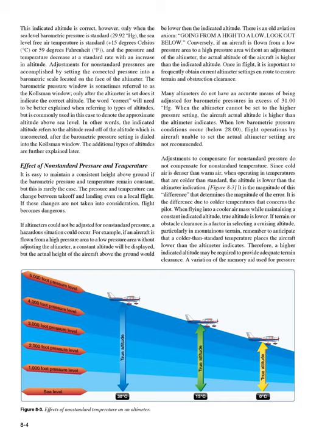Assume the pilot did not adjust the altimeter at Abilene and continued using the Mineral Wells setting of 29.94 Hg. When entering the Abilene traffic pattern at an indicated altitude of 2,600 feet, the aircraft would be approximately 250 feet below the proper traffic pattern altitude. Upon landing, the altimeter would indicate approximately 250 feet higher than the field elevation. Mineral Wells setting: 29.94; Abilene setting: 29.69; difference: 0.25. Since 1 inch of pressure equals approximately 1,000 feet of altitude, 0.25 × 1,000 = 250 feet. Always remember: when the actual pressure is lower than what is set in the altimeter window, the actual altitude is lower than what is indicated.